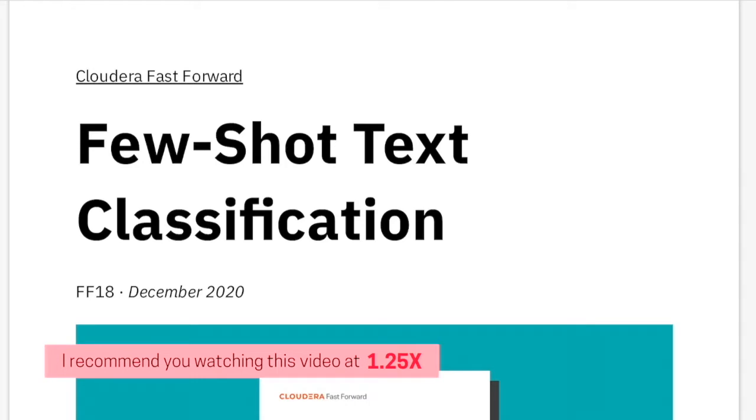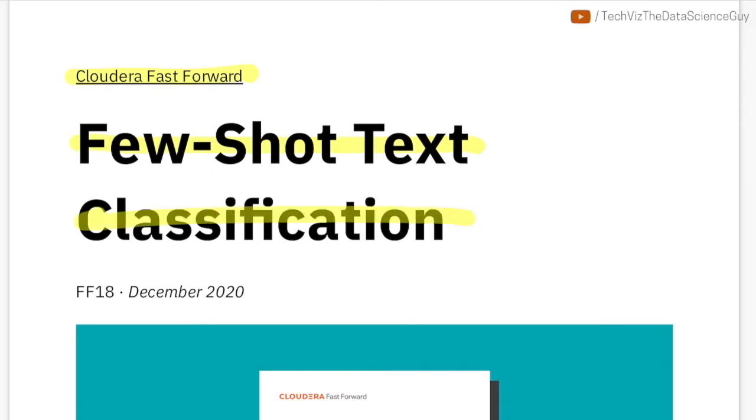Hello there, welcome back to the new video. Today we'll be going through this report by Cloudera Fast Forward Labs which is on Few-Shot text classification. This was released around December 2020.